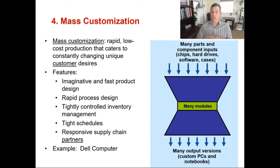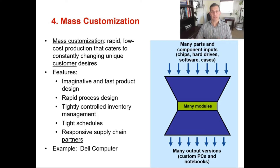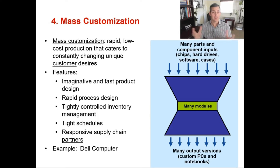An example for mass customization would be Dell computers. You put in many different inputs — computer chips, hard drives, software, cases. It can be a large computer or a small computer, various colors and speeds, and then there are a whole lot of different outputs. Typically customers can get a custom made PC in just a couple of weeks. A friend of mine ordered us all custom Nike training shoes with our school colors for a bachelor party. The shoes were maroon and gold with my name on the back, and the lead time was two weeks. That is mass customization — high volume and high variety products with that process.